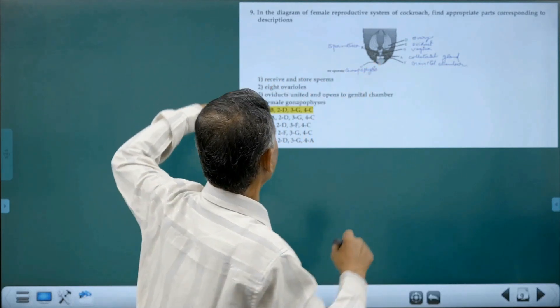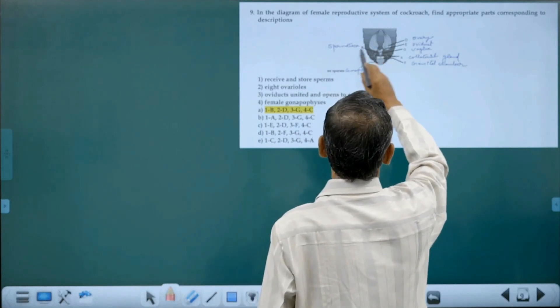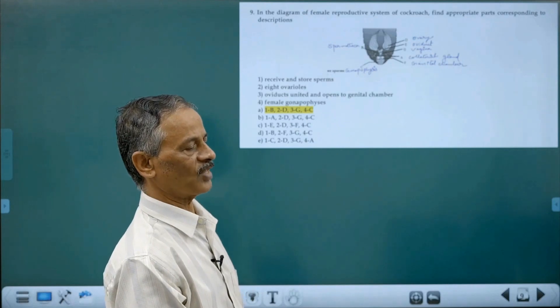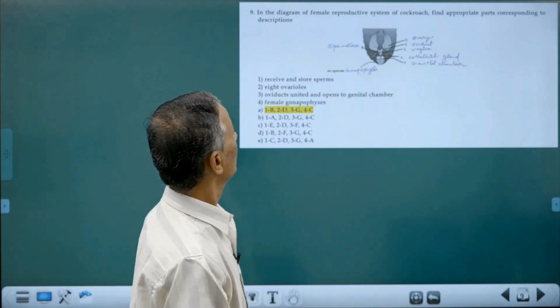...the sperm will be received and stored in the spermatheca. That's the function of spermatheca, which is lying on the sixth abdominal segment of a female.